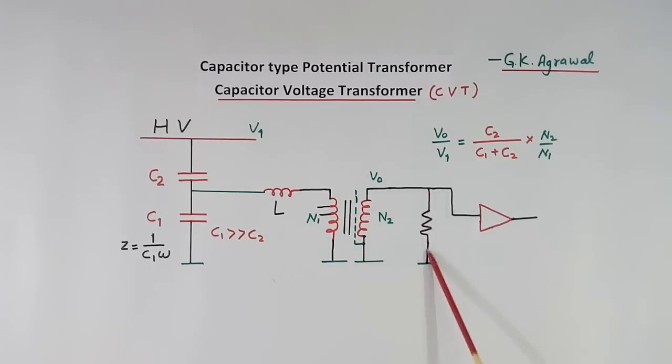Now this is the load. What happens? Because this is a capacitor and this is a resistor, there will be phase shift. To compensate that phase shift, we use here one inductor.